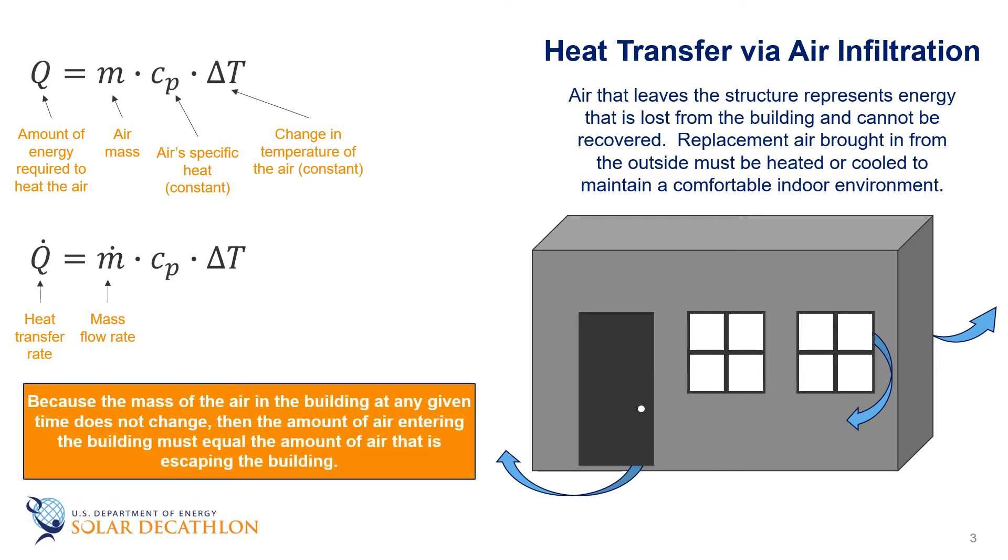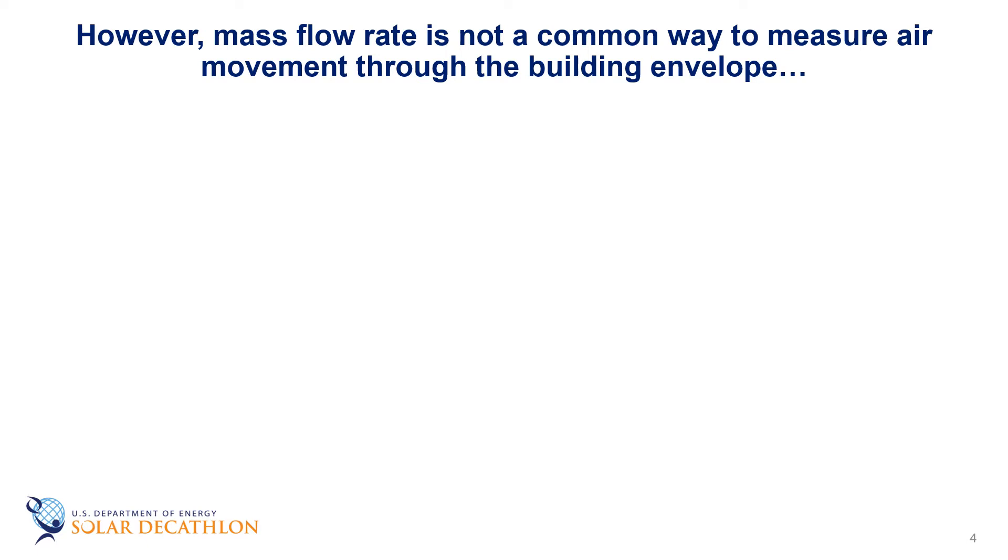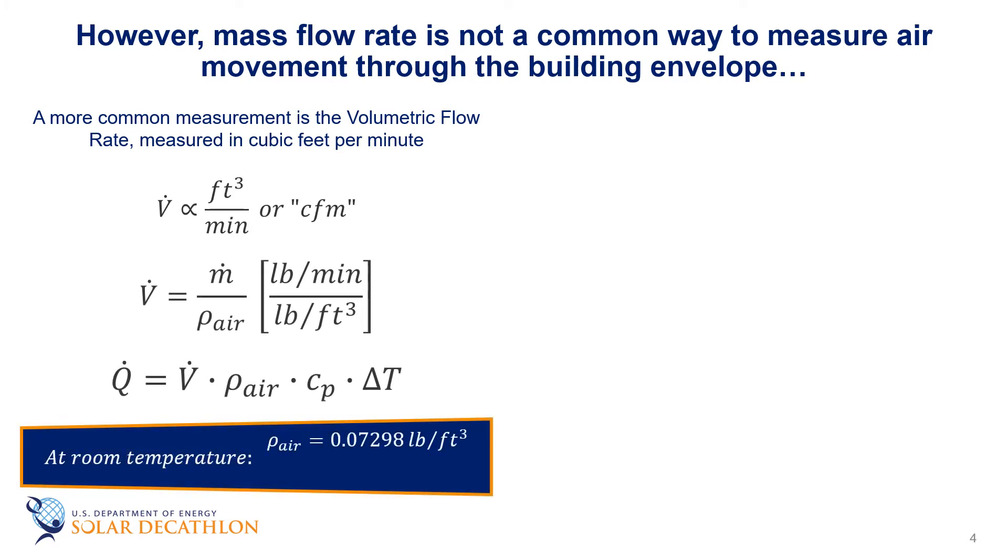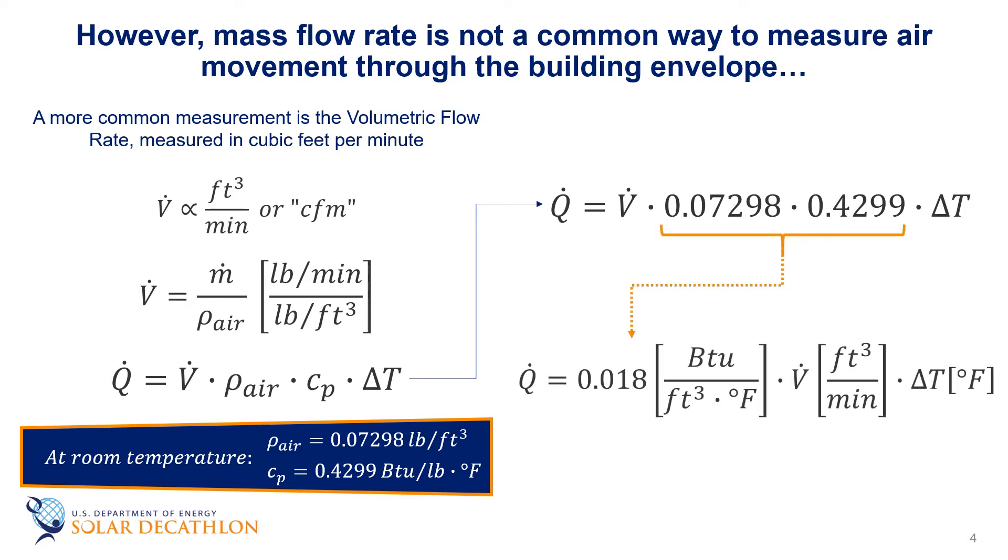Since the mass of air in the building is not changing, then the amount of air entering the building must equal the amount of air that is escaping the building. However, mass flow rate is not a common way to measure air movement. A more common way is to use volumetric flow rate, which is often measured in cubic feet per minute. The volumetric flow rate is equal to the mass flow rate divided by the density of air. Knowing that the density of air can be looked up, as well as its specific heat, we can substitute density and specific heat into the equation and end up with a simplified version, which is 0.018 times V̇, the volumetric flow rate, times ΔT, or the change in temperature from inside to outside.